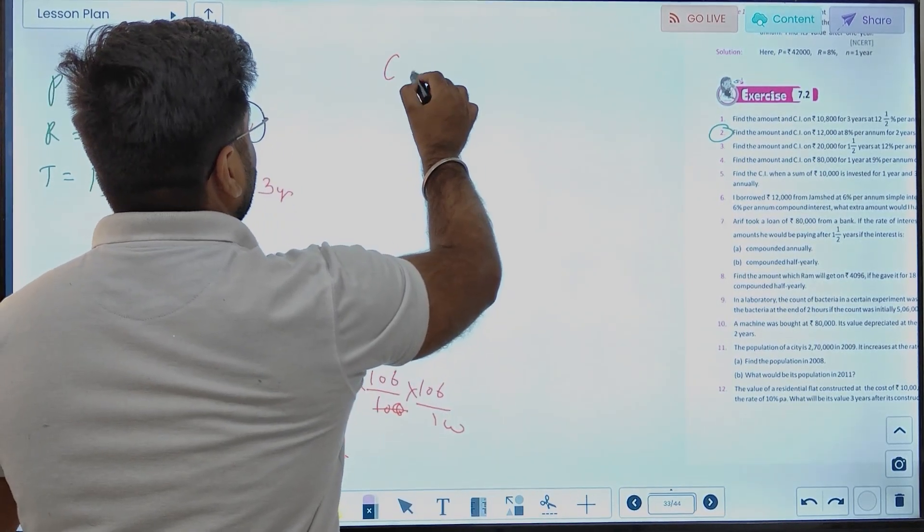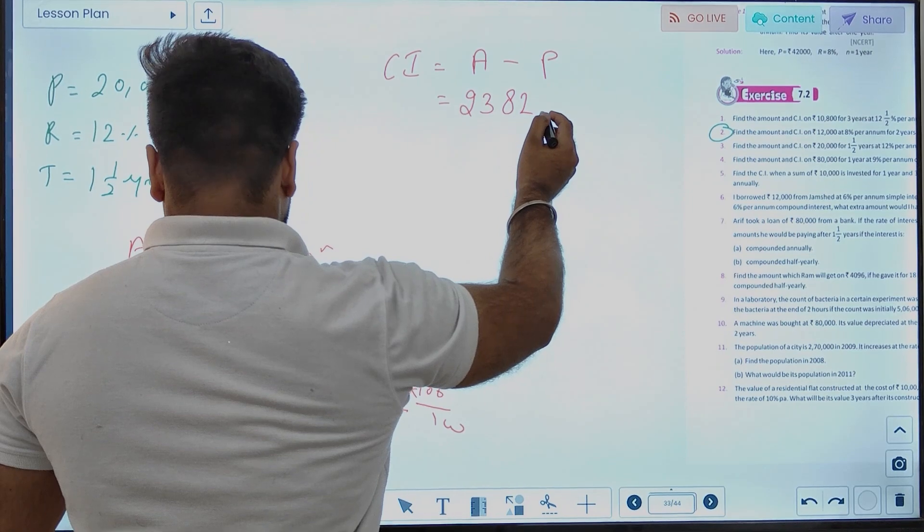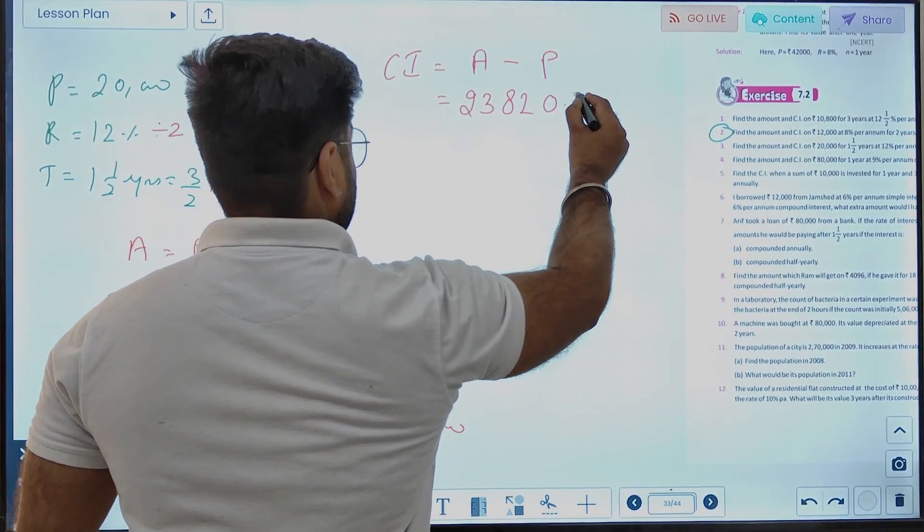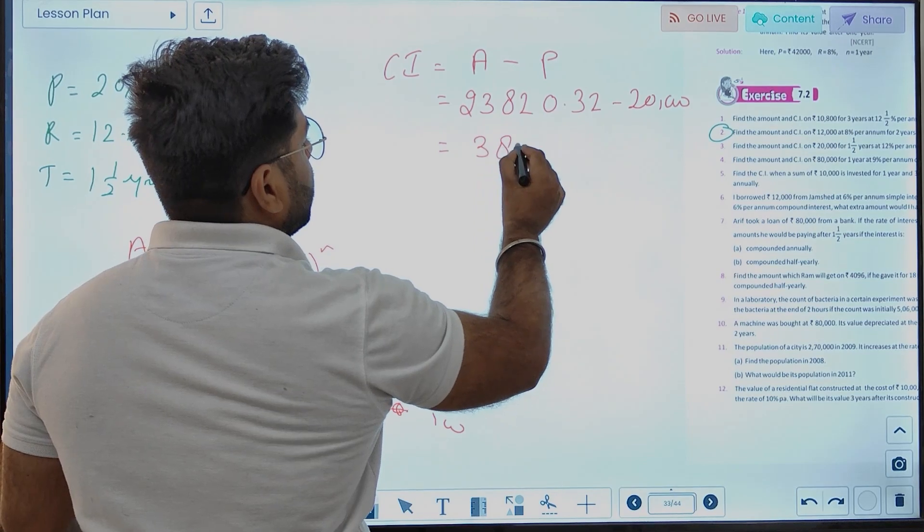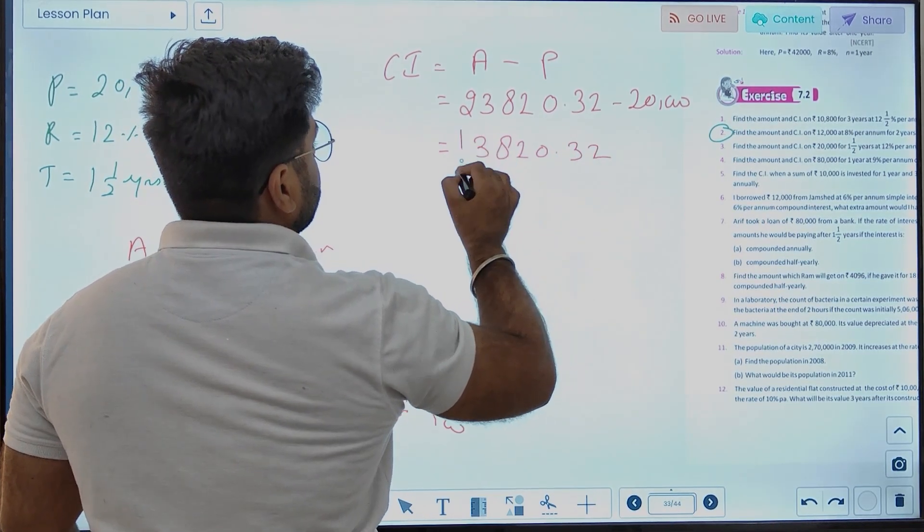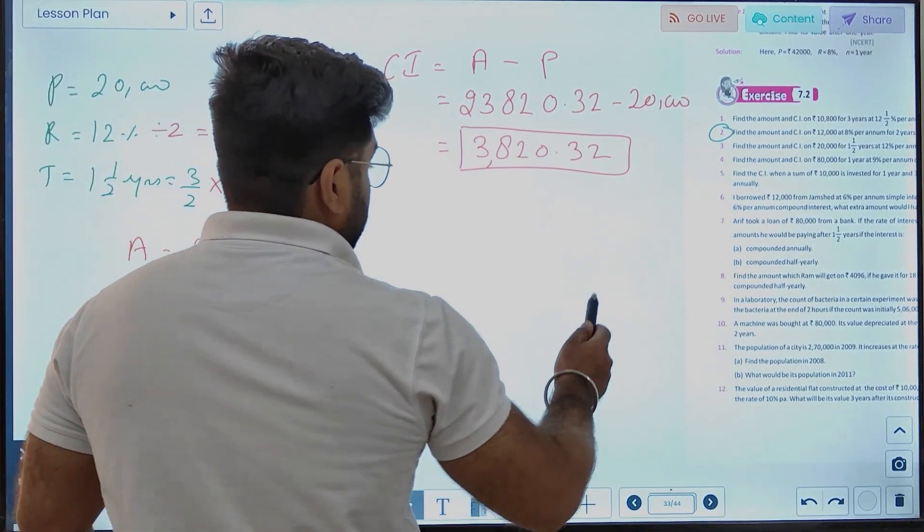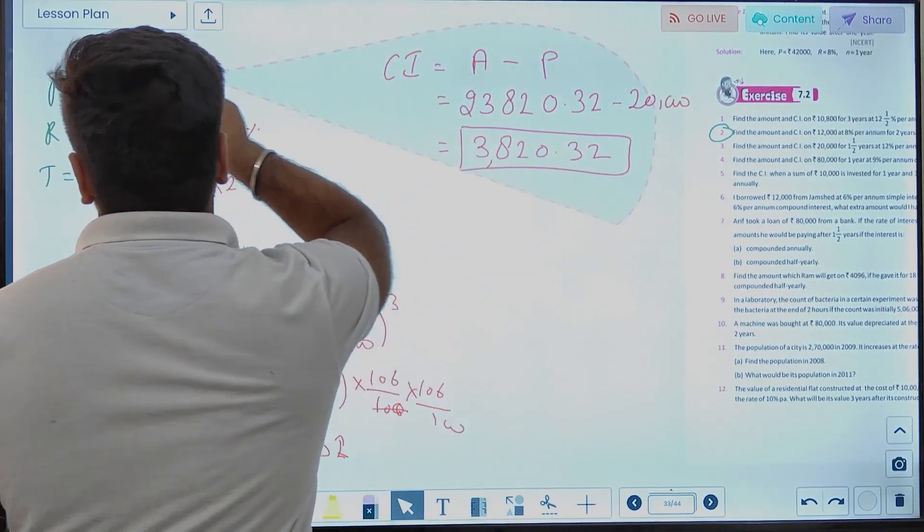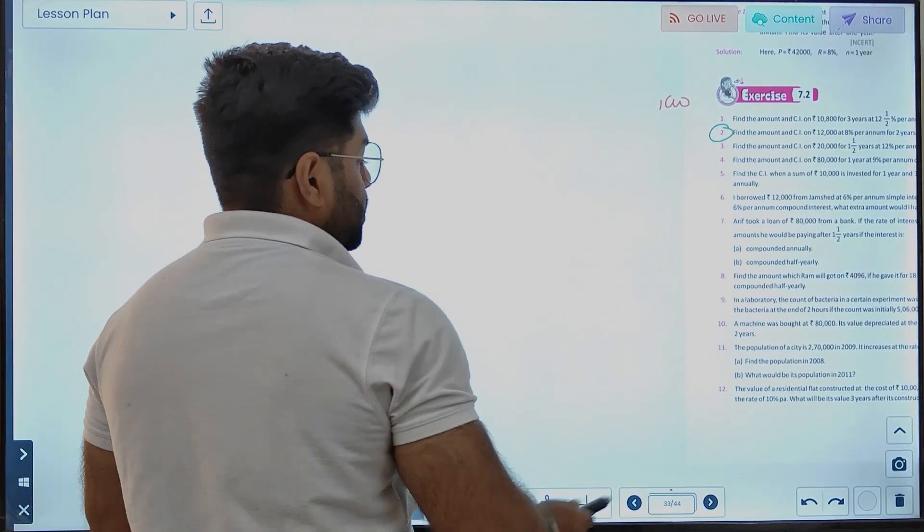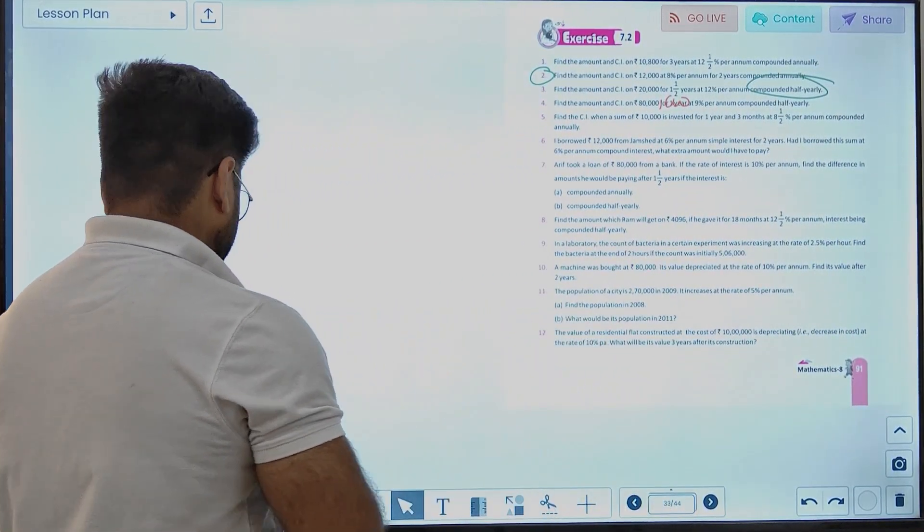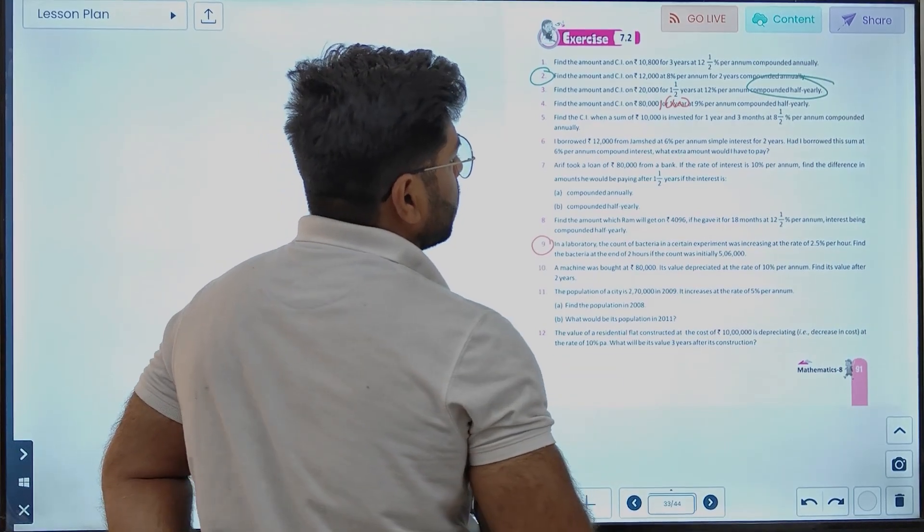So, we calculate 20,000 times (1 plus 6/100) squared. That gives us the amount. Then compound interest equals amount minus principal. Compound interest is 23,032 minus 20,000, equals 3,032 rupees.